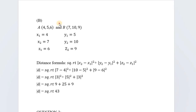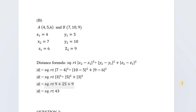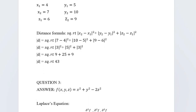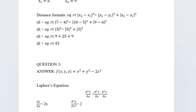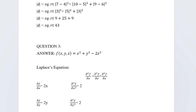Next, for the distance formula: distance = √[(x₂−x₁)² + (y₂−y₁)² + (z₂−z₁)²]. Just put the values in the same way, and after substituting, you will get your final answer for question 2.